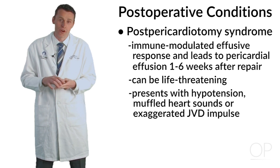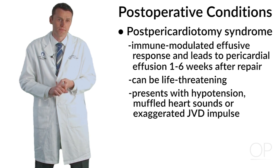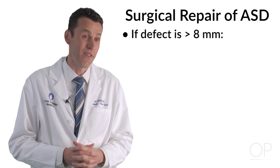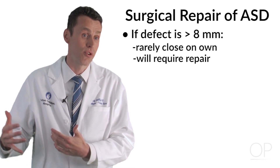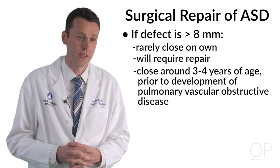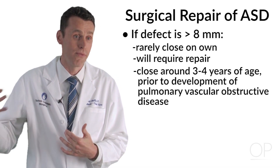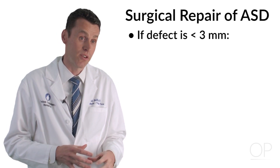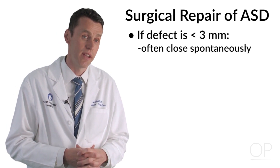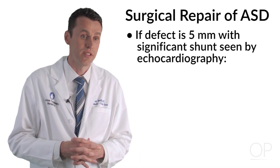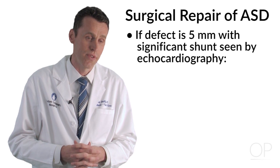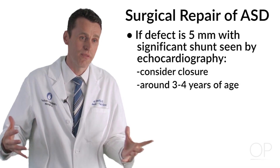Post-pericardiotomy syndrome can be life-threatening, presenting with hypotension, muffled heart sounds, or an exaggerated JVD impulse. Deciding who to repair is center-specific, but if the defect is greater than eight millimeters, it rarely if ever closes on its own and will require repair, warranting consideration of earlier closure. These are typically closed around three to four years of age prior to starting school, but before the development of pulmonary vascular obstructive disease. Defects less than three millimeters often close spontaneously and can usually be watched for a few years. However, a defect of five millimeters with significant shunt seen by echocardiography is worth considering for closure around age three to four.